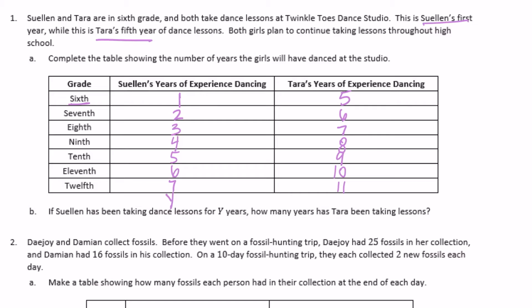From one to five we added four; from two to six is plus four; three to seven is plus four. So all the way down it's plus four to get Tara's years of experience. If Sue Ellen is y, then Tara would be Sue Ellen plus four years — whatever Sue Ellen's experience is, plus four more years. So we can say y plus four.